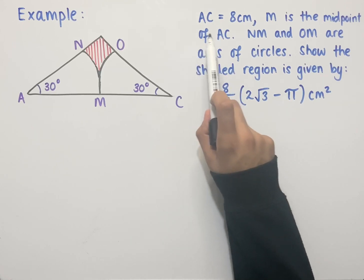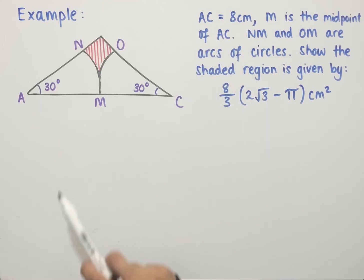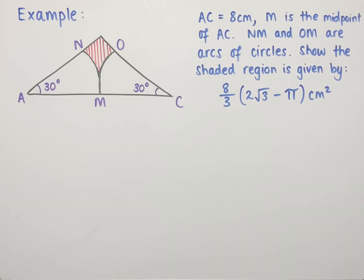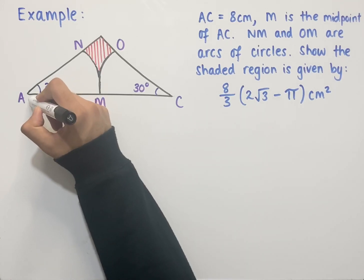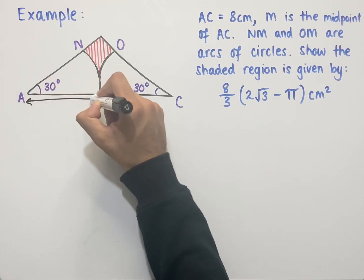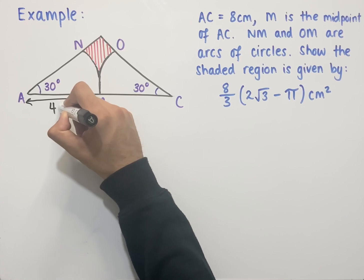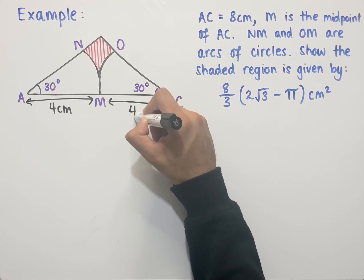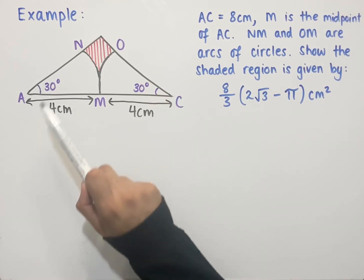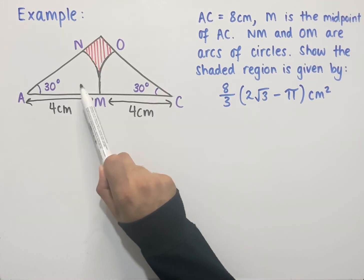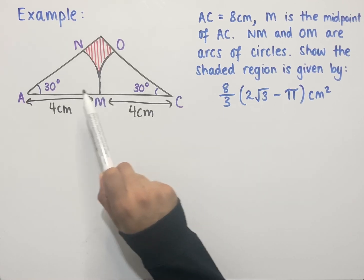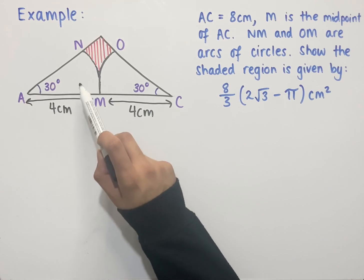We're first told that AC equals 8 centimetres, so the base length A to C is 8 centimetres. Since M is the midpoint of AC, the length A to M equals 4 centimetres and the length M to C also equals 4 centimetres. If we work out the sector area of one of these sectors, we can multiply by 2 to get the total area of both sectors.